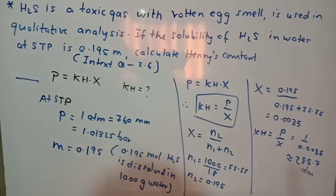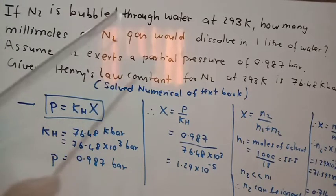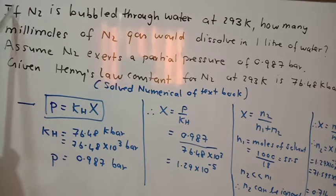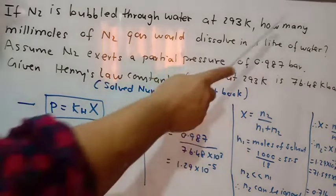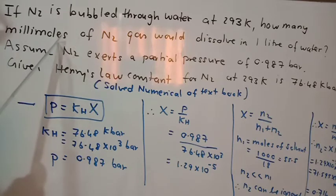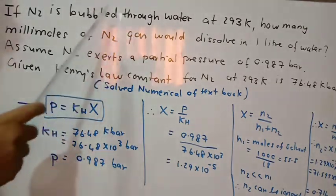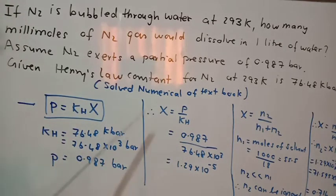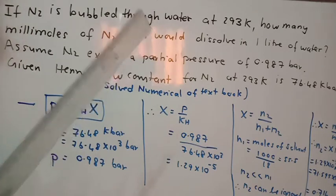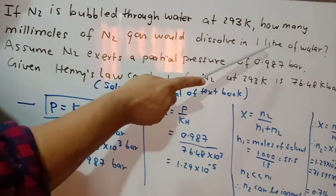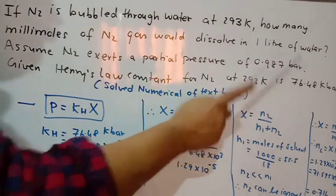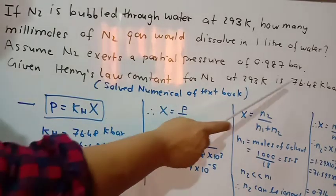I hope you got this. Now the next question is the solved numerical from the textbook. The question is: if N2 is bubbled through water at 293 K, how many millimoles of N2 gas would dissolve in one liter of water? Note that 'one liter' means 1000 mL. Since water's density is 1, this equals 1000 grams of water.